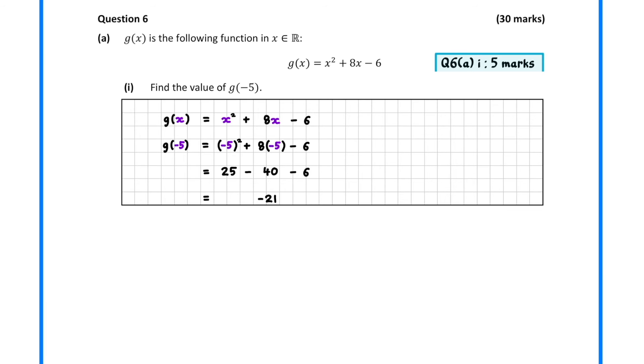In question 6a, we are given a function g. In part 1, we must evaluate g(-5). To do this, we sub in x equals minus 5 into our function definition, and then calculate the answer.